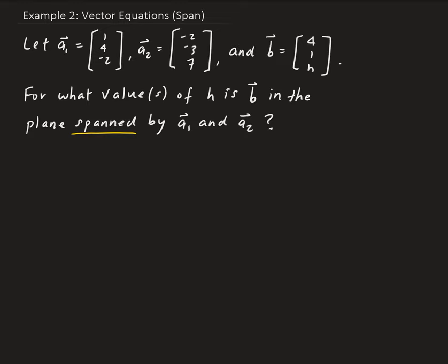So in other words, this is what we need to find out: can b be written as a linear combination of a1 and a2? That is, we have x1 times a1 plus x2 times a2 equals b. If that's the case, then b is in the plane spanned by a1 and a2.